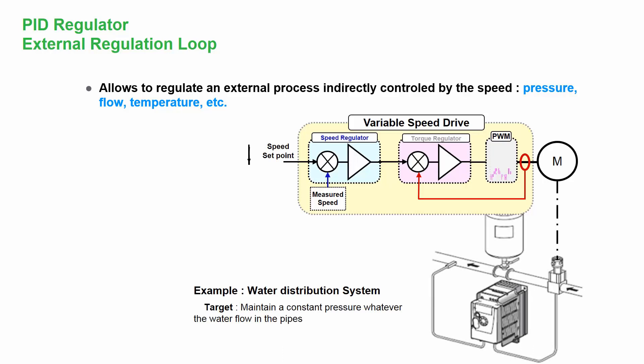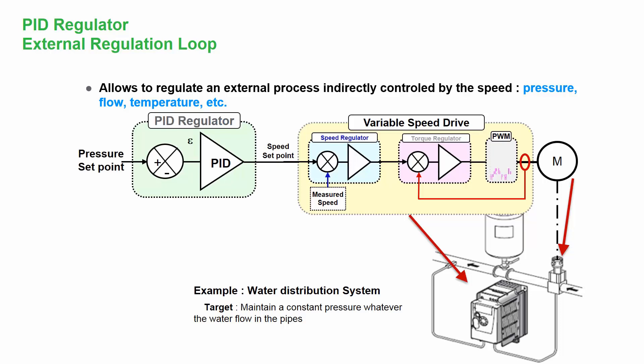If, for example, we put this motor on a certain pump in a water distribution system and we want to maintain pressure, we have a motor connected to a pump and a variable speed drive connected to this motor. Then we have to implement a PID regulator.